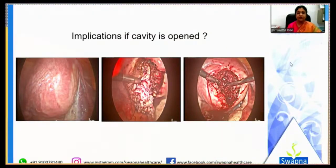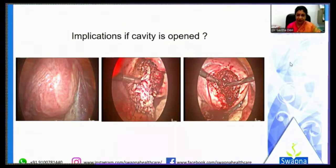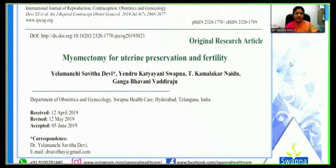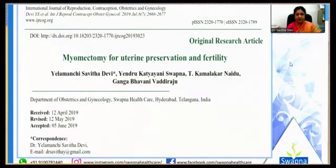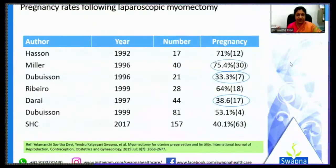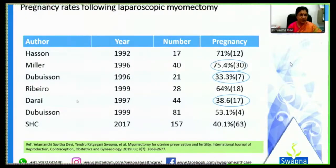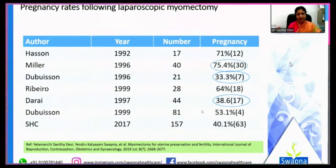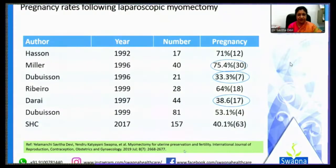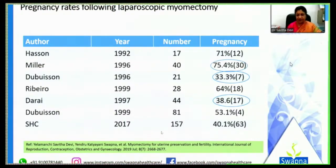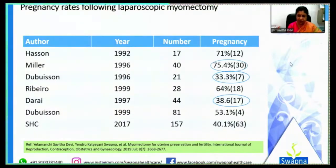Even if the endometrium is opened, a perfect repair with perfect hemostasis produces a good scar. We published our results in the International Journal of Reproduction, Contraception, Obstetrics and Gynecology in 2019, comparing conception rates with different authors following myomectomy. Out of approximately 800 myomectomies performed, 157 were done for infertility between specific years. Conception rates in the literature range from 38% to 75%; our rate was 40%.